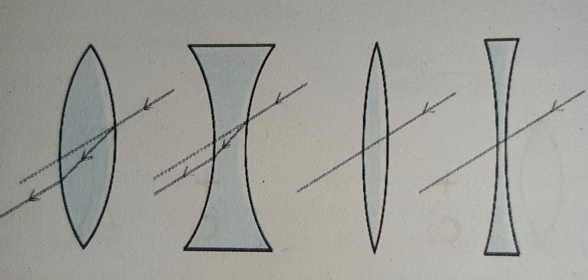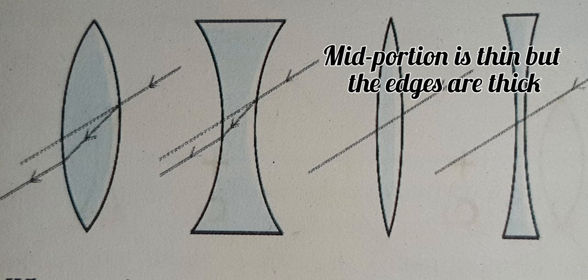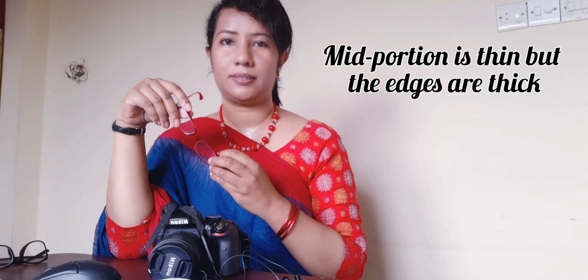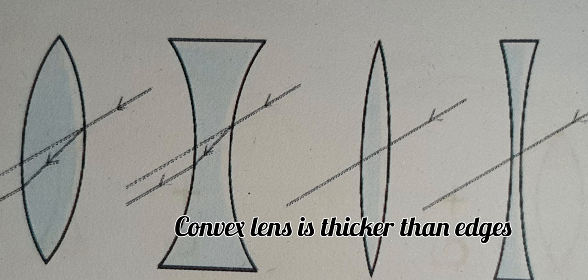You must remember that. What's the difference between concave and convex? The lens whose mid portion is thin but the edges are thick — that is called a concave lens. And convex lens is the opposite: the mid portion is thick but the edges are thin. That is called a convex lens.